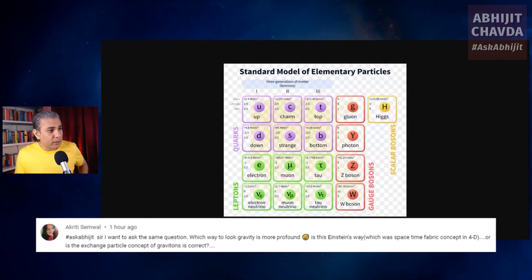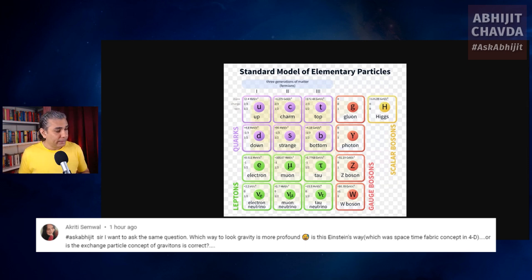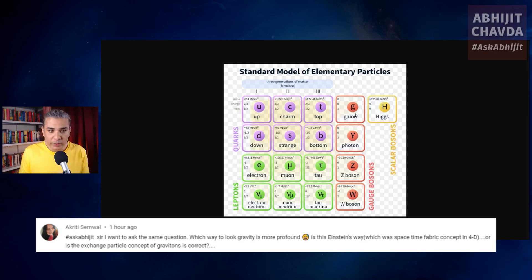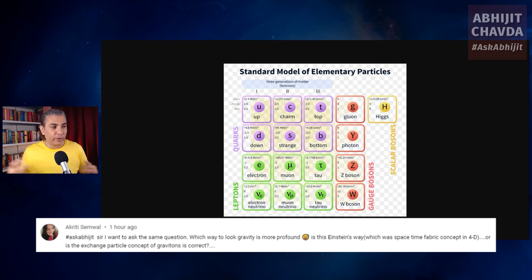Let me share this image. This is the Standard Model of physics — the best theory of particle physics that we have, the best theory that describes the 5% of the universe that we can actually see. You have three generations of matter: the quarks, the leptons, and the gauge bosons. You have six quarks. You have the leptons — electron, muon, tau lepton, and the corresponding neutrinos. Then you have the gluon, which is the exchange particle for the strong nuclear force; the photon, which does it for electromagnetism; and the W and Z bosons that are the gauge bosons for the weak nuclear force. And then you have the Higgs boson, which imparts mass to various particles and is responsible for the mass of the universe.